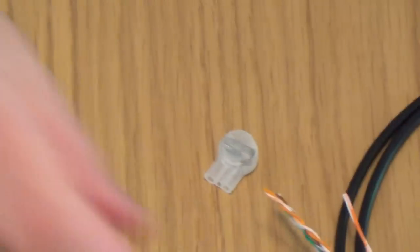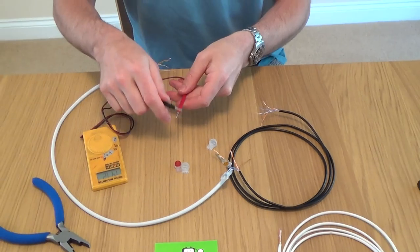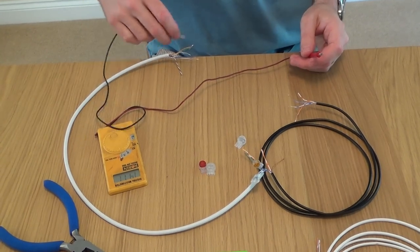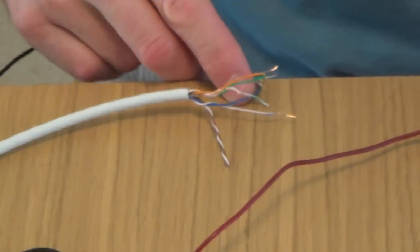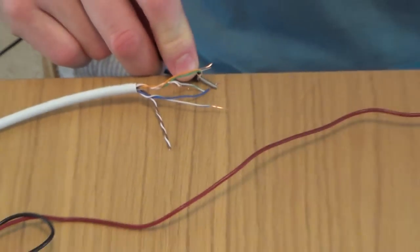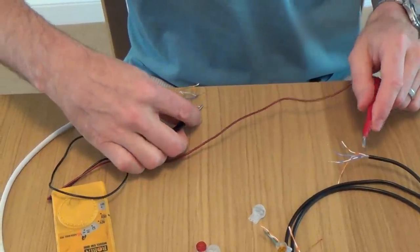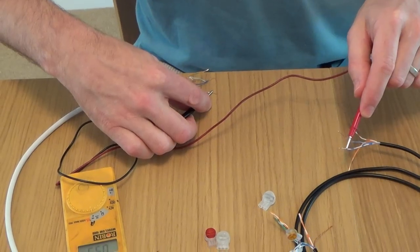Now just to show you how that is connected, I've got a little continuity meter here. You can hear that when I touch the ones together. So I'm going to go onto the blue wire here and the blue wire here, and you can see they're now connected, and the white blue here and the white blue here is also connected.